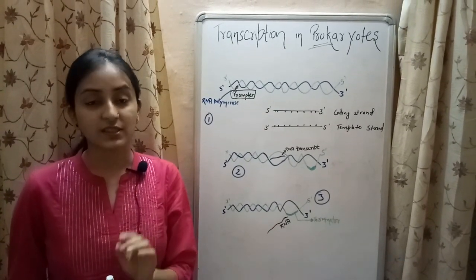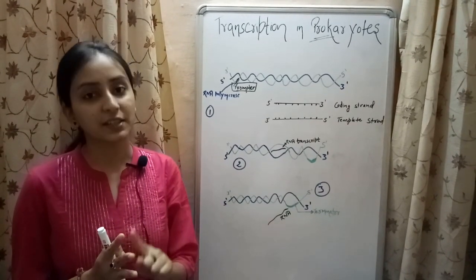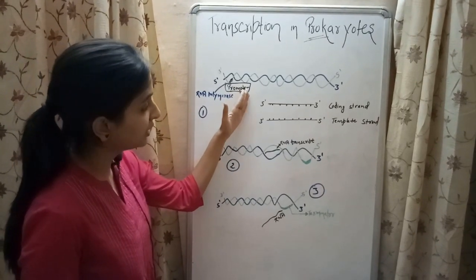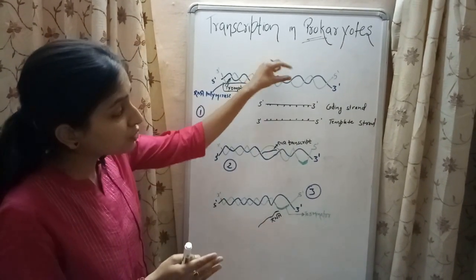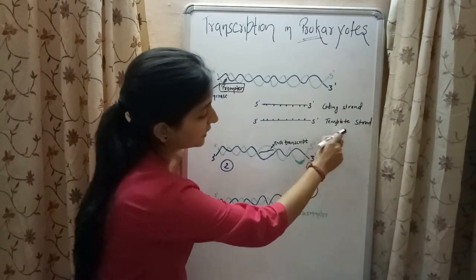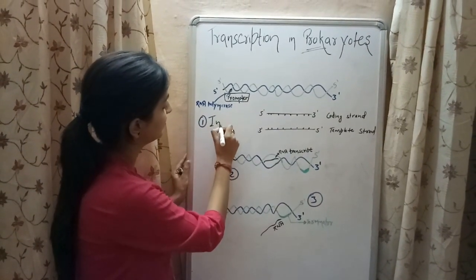There are three major stages in the process of transcription: initiation, elongation, and termination. When the RNA polymerase gets attached to the promoter region, it separates the two strands of DNA providing the strand which acts as template for synthesizing RNA molecule, and this step is known as initiation.